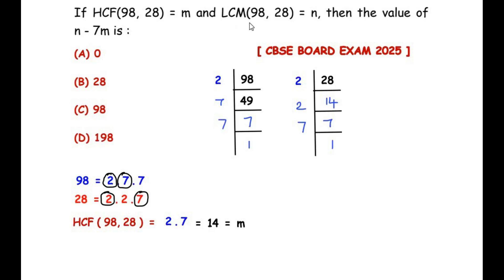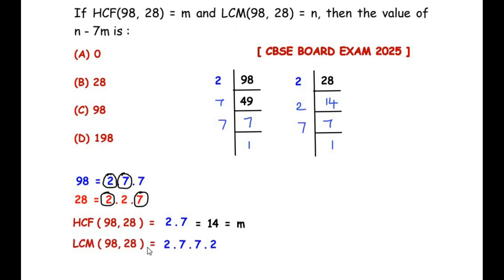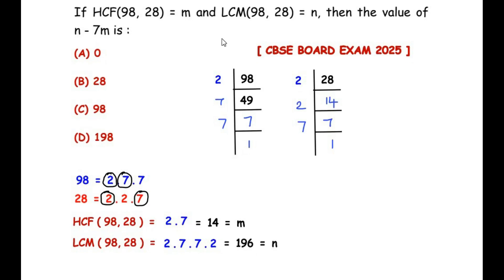Next, let's focus on finding the LCM. The LCM of these two numbers is the product of the common factors, that is 2 and 7 which we got for the HCF, multiplied with non-common factors. So 2 times 7 times 7 times 2, which gives us 196. Since the LCM is given as n, the value of n is 196.